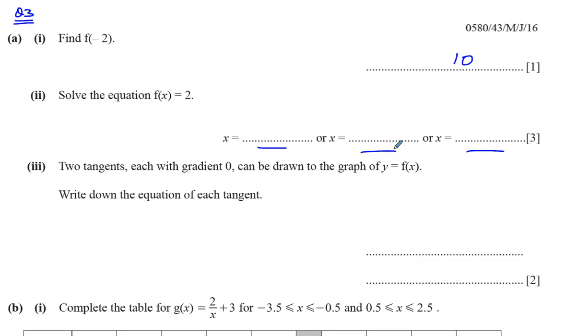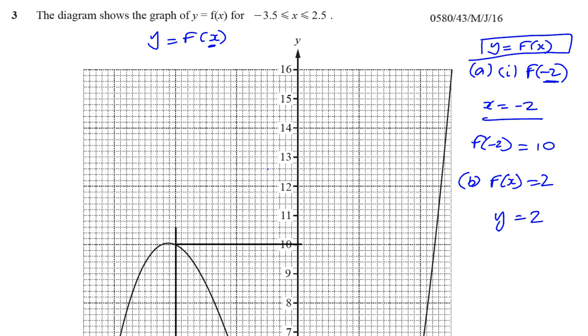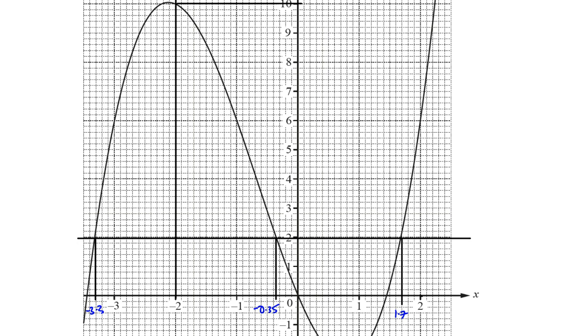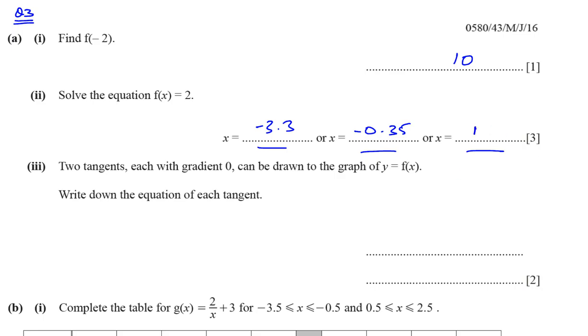minus 0.35. And the other one was 1.7. So, those are the solutions to that equation. And, of course, here we had no choice but to use a graph.